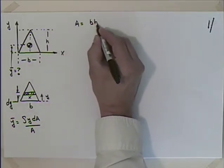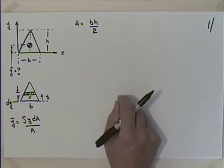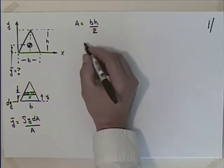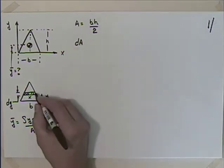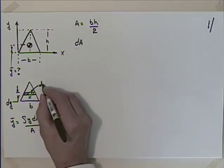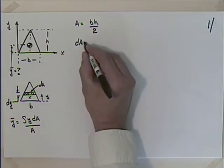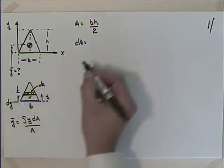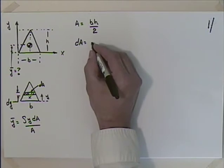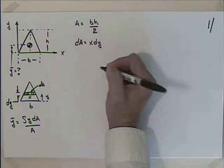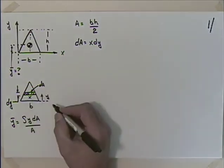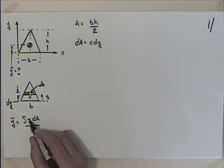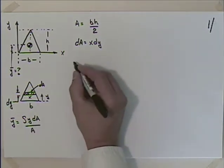Most of the time we'll know the area. Now dA is the area of this element. When dy goes to zero, it looks like a rectangle, so it's going to have dimensions x times dy. That gives me dA. But I don't want an x in this calculation — I want it in terms of y. So I'm going to look at similar triangles.